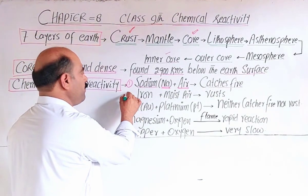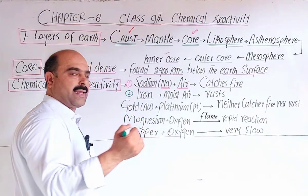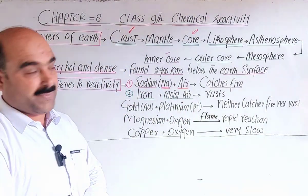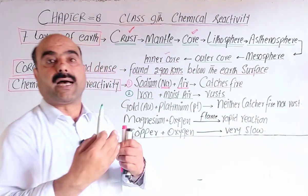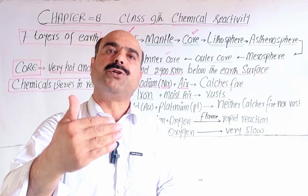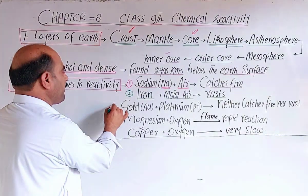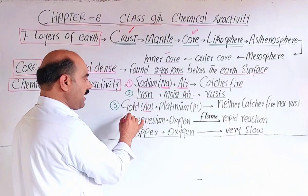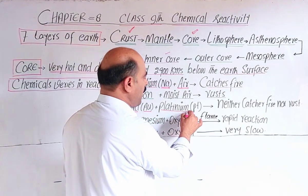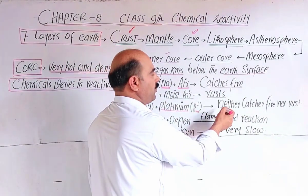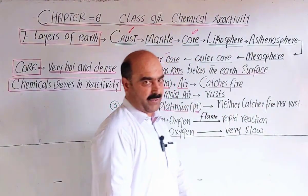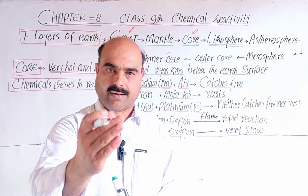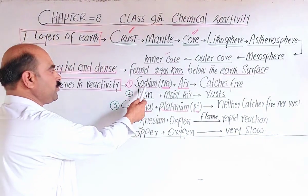Comparing sodium to iron: iron (symbol Fe, later name ferrum) — in moist air, iron rusts. Rust means zang lagna, i.e., corrosion. So iron is less reactive than sodium but still reactive. Another example: gold (symbol Au, later name aurum) and platinum (symbol Pt) — these two elements neither catch fire nor rust, meaning they are very little reactive or non-reactive.